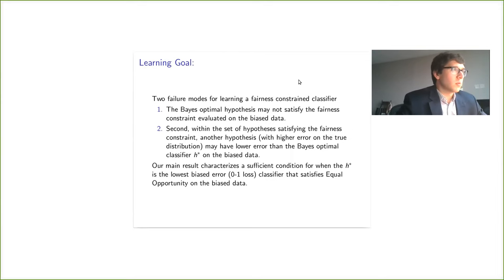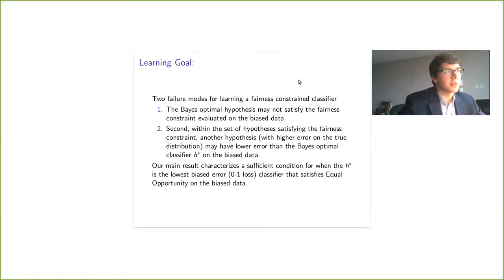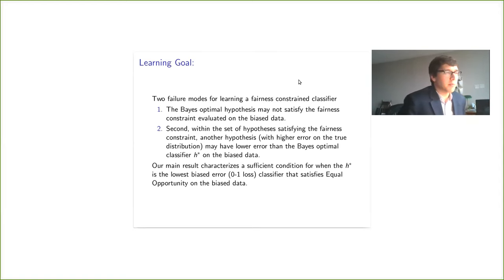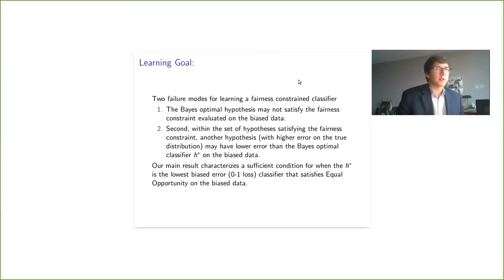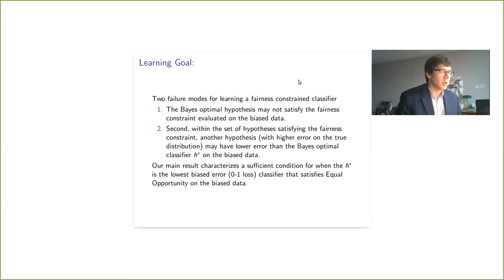There are two failure modes for learning a fairness-aware classifier using these fairness constraints. The first is that the Bayes optimal hypothesis H_A* and H_B* may not satisfy the fairness constraint on the biased data, so it won't be returned by your algorithm. Second, within the set of hypotheses satisfying the fairness constraint, maybe another hypothesis that is not H* has lower error than H* on the biased data. Our main result characterizes a sufficient — and actually necessary — condition for one: H* is the lowest biased-error classifier that satisfies equal opportunity on the biased training distribution.